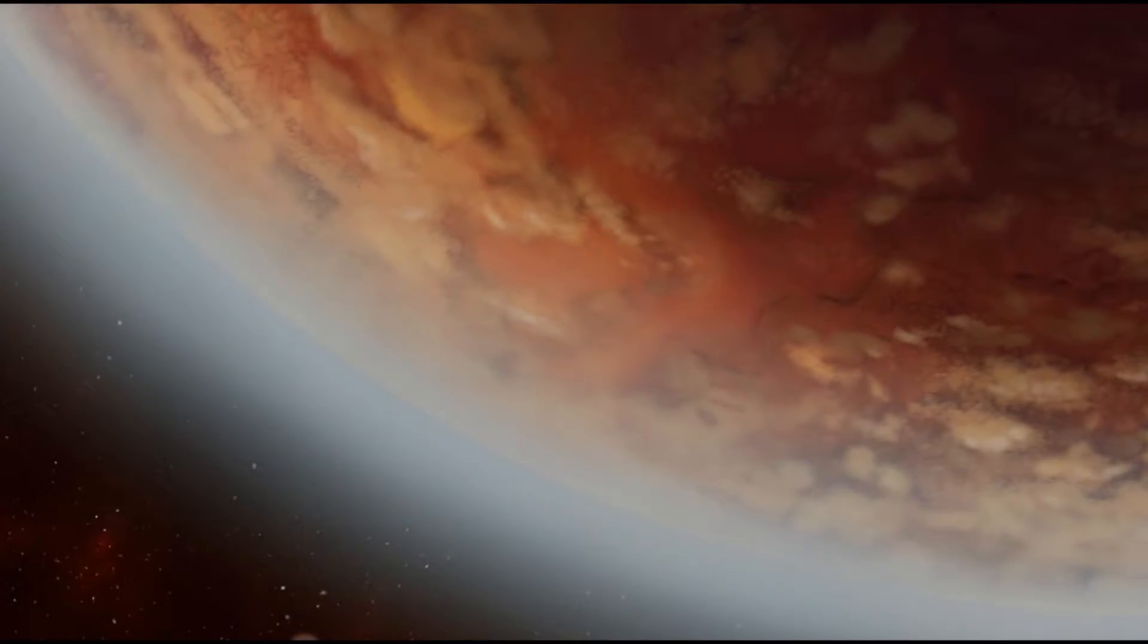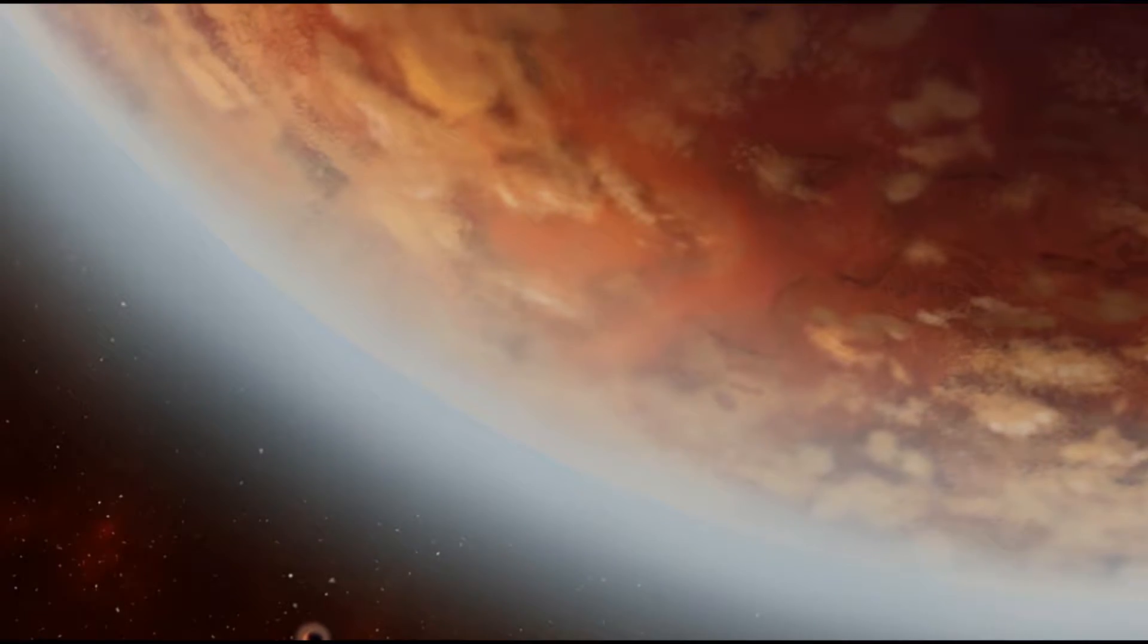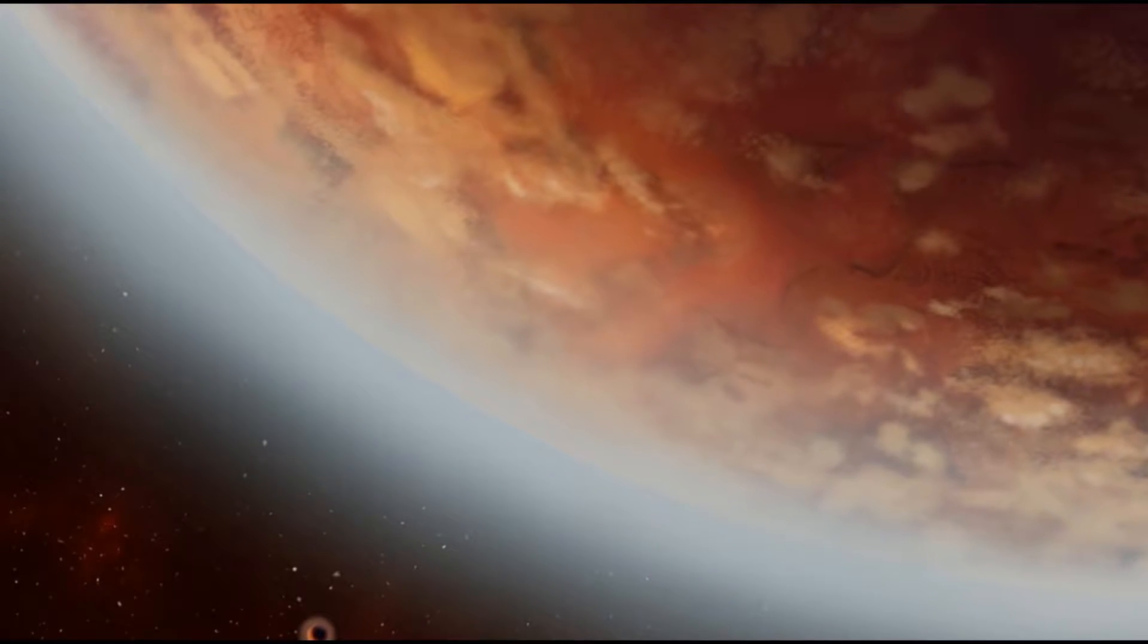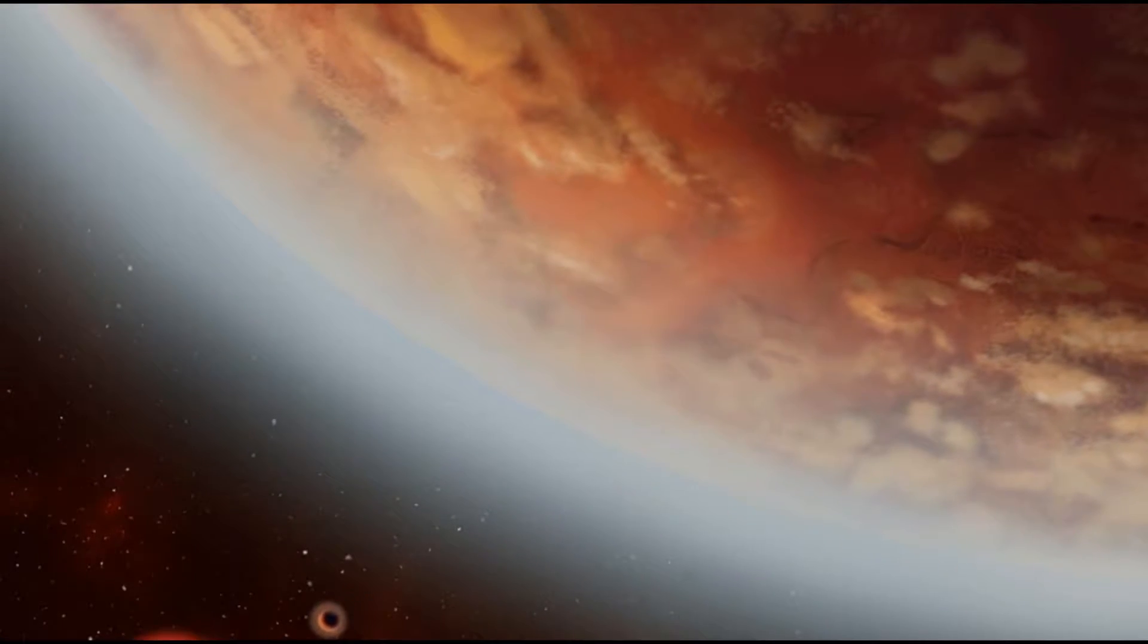Astronomers using the NASA ESA Hubble Space Telescope have detected water vapor in the atmosphere of K2-18b, a planet of eight Earth masses in the habitable zone of the M-type dwarf star K2-18.